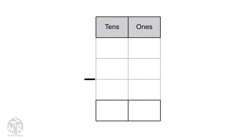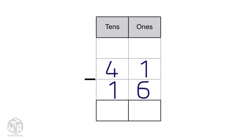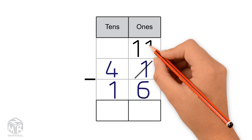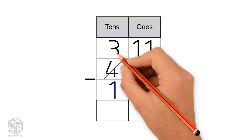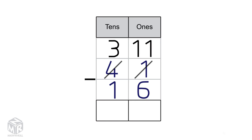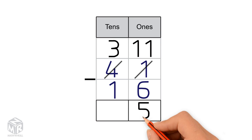Let's try another example: 41 minus 16. Pause this video and try to solve it on your own. We can't subtract 6 from 1, so we regroup one 10 as 10 1s. Now we have 11 1s and 3 10s. Next, we subtract the 1s: 11 minus 6 equals 5.